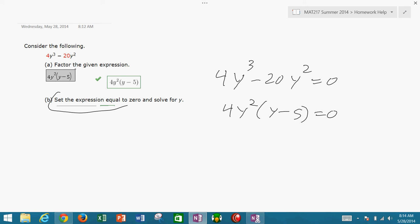Okay, so you're gonna say 4y squared equals zero, and then the other factor would be y minus 5 equals zero, and you solve each of those problems individually and you get your answers.